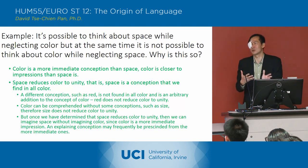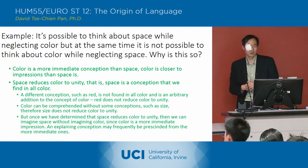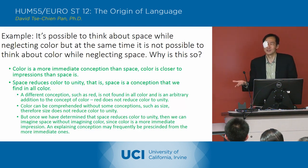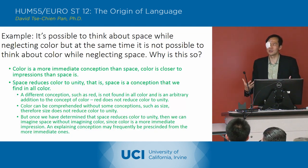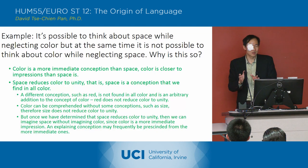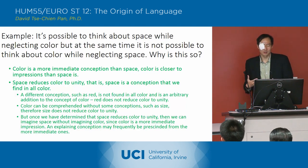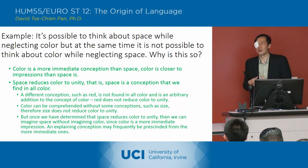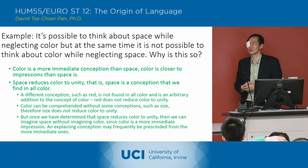For example, take red. Red is not found in all color, so it's an arbitrary addition to the concept of color — red doesn't reduce color to unity. You can't say all color is red. But you can say all color exists in space. Similarly, size doesn't reduce color to unity either, because you can comprehend color without thinking about size. The size of a red blotch doesn't matter to the conception of color.